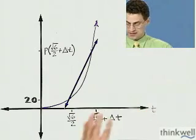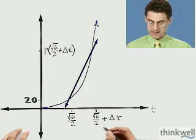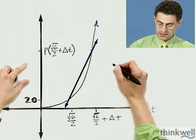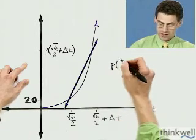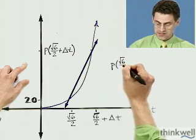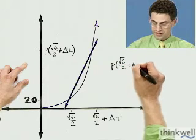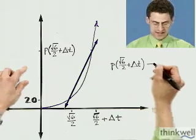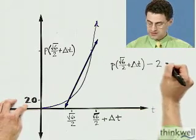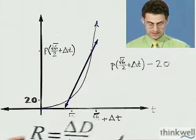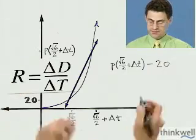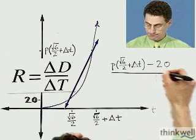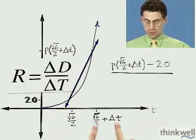Let's see what we get. Let's see exactly what this looks like. Well, what this looks like is, well, p of square root of 6 over 2 plus delta t minus 20. So that's the change in distance. And I've got to divide that by the change in time.